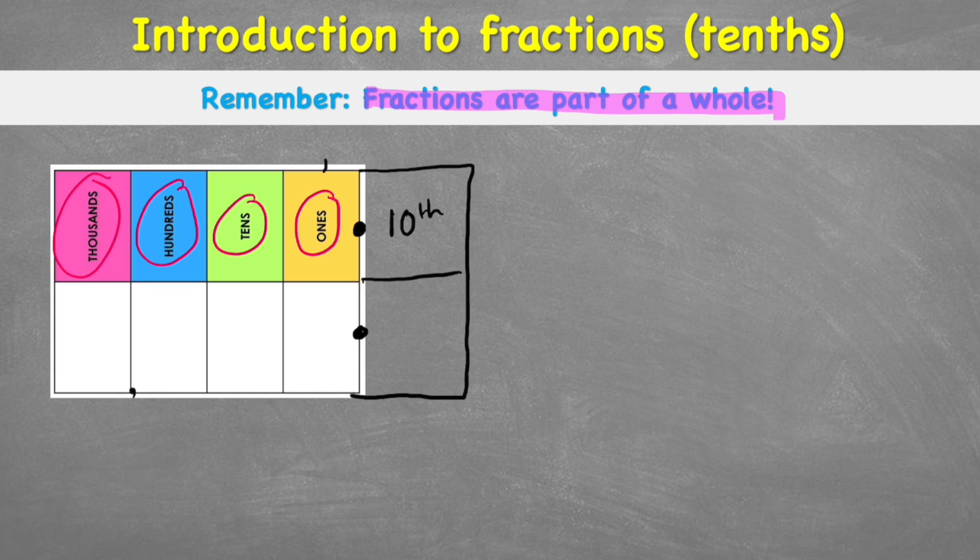And the reason it's tenths is because if we think about it, everything going positive across our place value is multiplied by ten. So one to ten, ten to a hundred and a hundred to a thousand, they're all multiplied by ten. So everything coming down the place value chart is divided by ten. So a thousand down to a hundred is divided by ten. A hundred down to ten is divided by ten. Ten down to one is divided by ten. And therefore, one divided by ten equals tenths. So our new column is the tenths column.